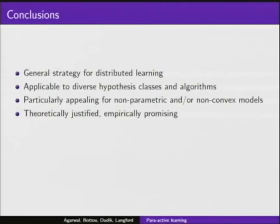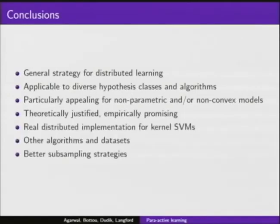I think at a high level this seems like a fairly nice general strategy for distributed machine learning. Primarily because it seems to be applicable to slightly more diverse set of hypothesis classes and algorithms than maybe some of the existing approaches. It's particularly appealing for non-parametric and non-convex models that have maybe not received as much attention before, and all in all, it seems theoretically reasonably well-motivated and empirically fairly promising. So, in terms of going forward, we would like to also do a real distributed implementation for kernel SVMs at least, and maybe for some other algorithms, evaluate things on more data sets, and maybe use different subsampling strategies and so on. But in the interest of time, I'm gonna stop here and happy to take any questions.